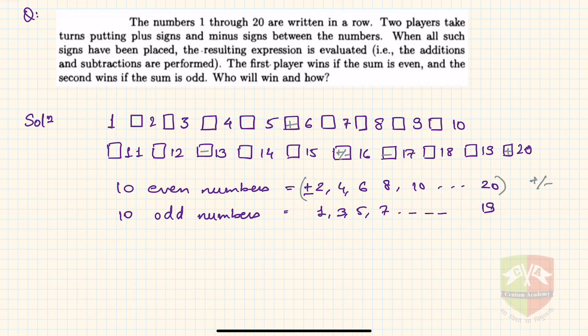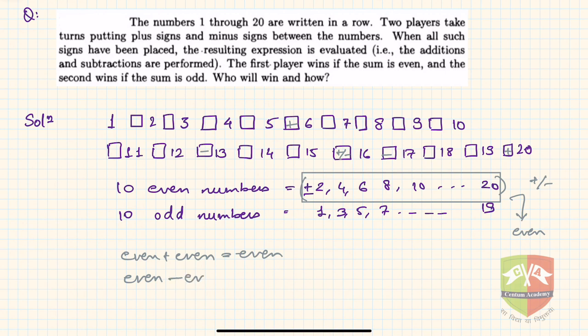Now let's take the case of even numbers. Whether there is a plus sign ahead of 2, 4, 6, 8, 10 or a minus sign, the result of all this sum together will always be even. Why? Because even plus even is even, and even minus even is also even, isn't it?